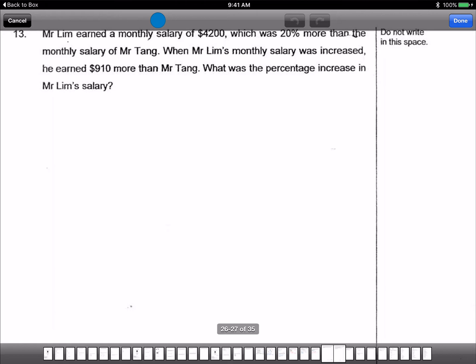Okay, Mr. Lim earned a monthly salary of $4,200, which was 20% more than Mr. Tang. So we have Mr. Lim $4,200, Mr. Tang. Now how much did Mr. Tang earn? What's the amount?